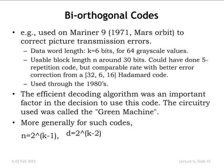On Mariner 9 in 1971, which went into Mars orbit, the code was used to encode the picture transmissions. Each data word was six bits to encode 64 gray levels in a picture. It turned out that because of transmission issues, the safe number of bits for a block was 30 bits, after which you had to do a little realigning. So a choice of n in that vicinity was a natural choice. One thing you could have thought to do would be to take the six bits and repeat them five times in that 30-bit window — that would be a repetition code.